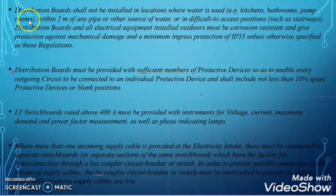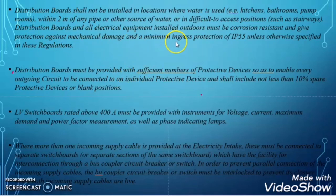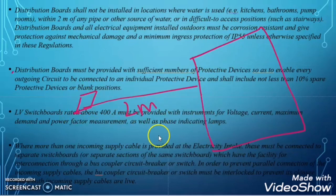The next clause states that distribution boards shall not be installed in locations where water is used — like kitchens, bathrooms, or pump rooms — and must be at least 2 meters from any pipe or other source of water, or in difficult-to-access positions such as staircases. Distribution boards and all electrical equipment installed outdoors must be corrosion resistant, protected against mechanical damage, and have a minimum ingress protection rating of IP55 unless otherwise specified.